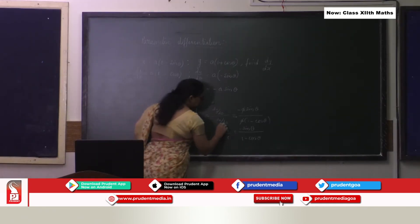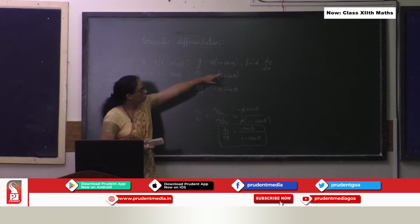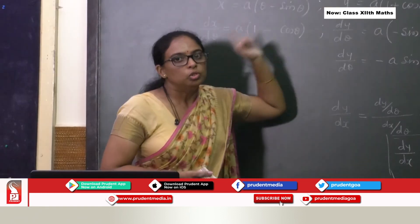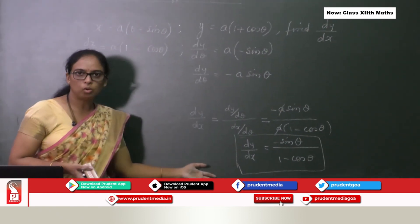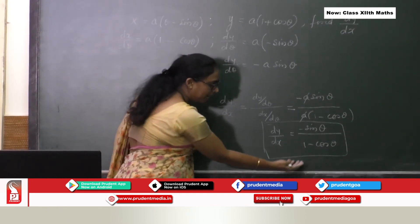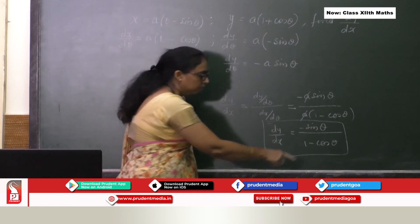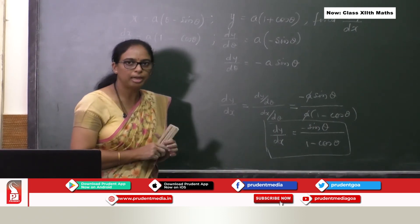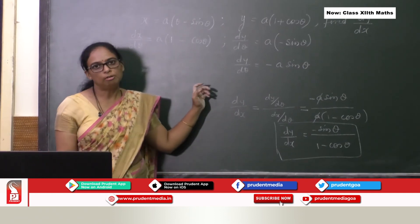A possible variation is finding dy/dx at a specific value, such as θ = π/4. The full solution proceeds as before, then substitute θ = π/4 and the corresponding trigonometric values to obtain a constant numerical answer.